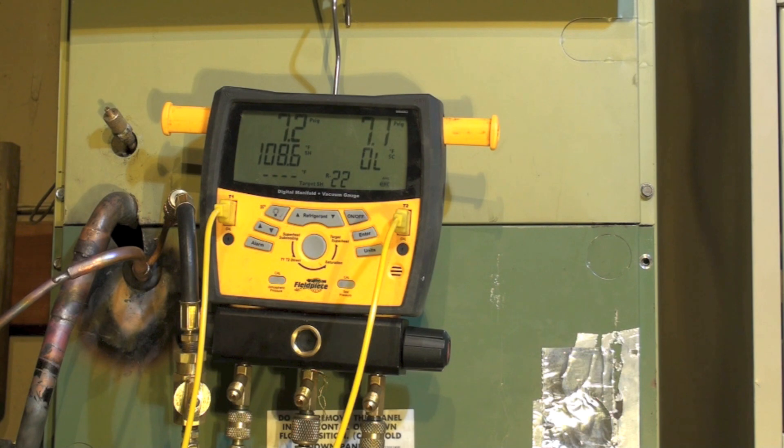Put our Schraders back in. We've got about seven pounds of pressure in there now. We're going to start charging this thing. The first thing I'm going to do is charge liquid in the high side.